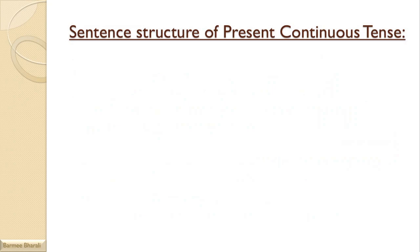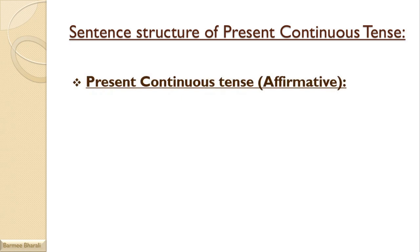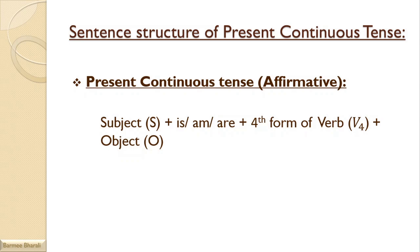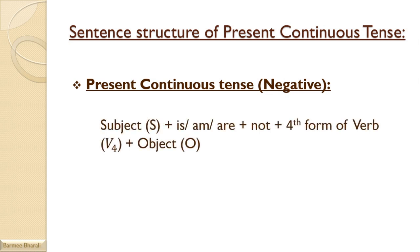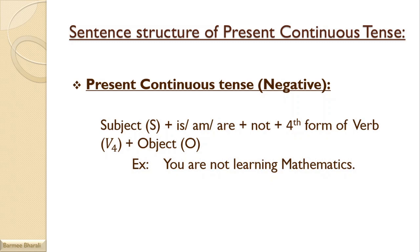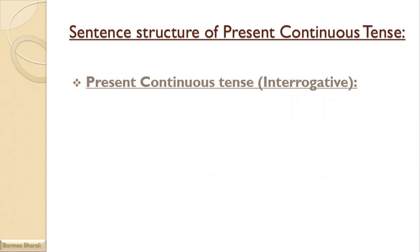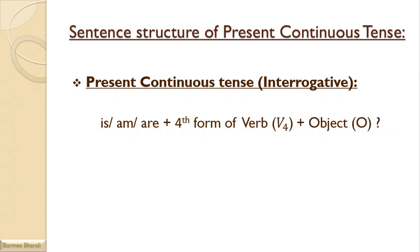The sentence structure of present continuous tense affirmative is: Subject + is/am/are + fourth form of verb + object. For example, 'You are learning mathematics.' For the negative: Subject + is/am/are + not + fourth form of verb + object. For example, 'You are not learning mathematics.' For the interrogative: Is/Am/Are + subject + fourth form of verb + object + question mark. For example, 'Are you learning mathematics?'